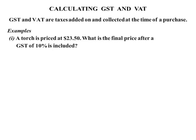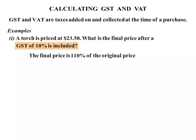Let's look at some examples. The first one: a torch is priced at $23.50. What is the final price after a GST of 10% is included? The idea is if you increase something by 10%, you've got the original 100% of the price plus another 10%. So the final price is 110% of the original price.